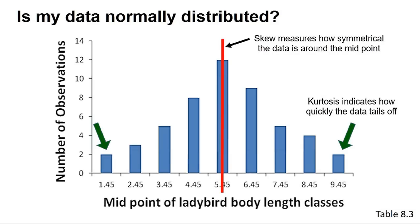We can also calculate a kurtosis value. In a normally distributed data set, the data tails off from the central position in a defined way. The kurtosis value can indicate if your data tails off too quickly or slowly. A kurtosis value between minus 2 and 2 can be consistent with a normally distributed data set. Using these three measures, we can at least give some justification for using a parametric test to analyse our data.